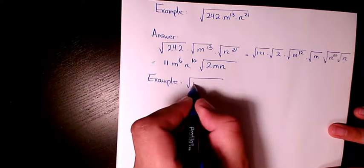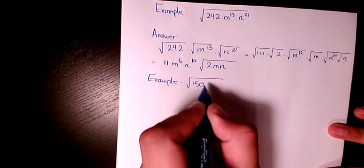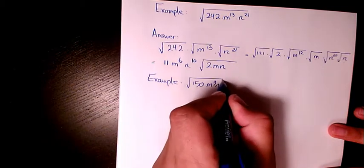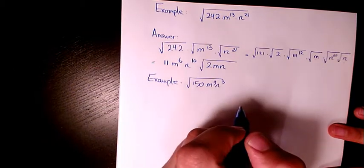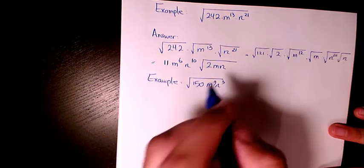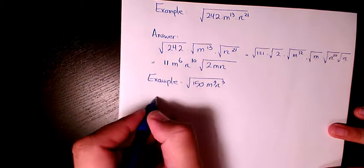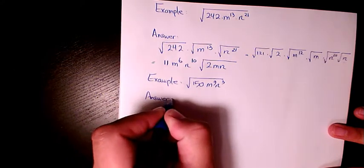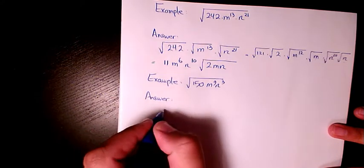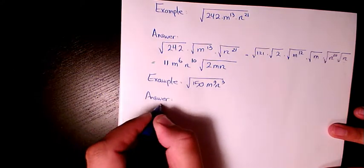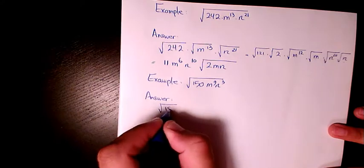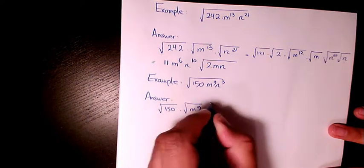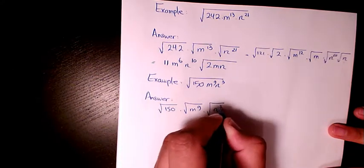Next example: we have the square root of 150 m to the power of 9, n to the power of 3. We rewrite it as the square root of 150 times m to the power of 9 times n to the power of 3.